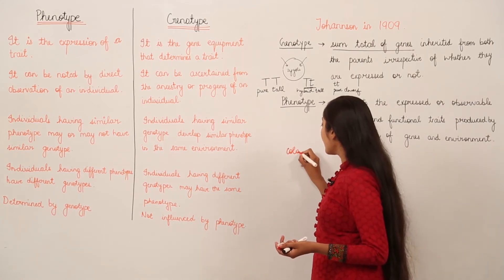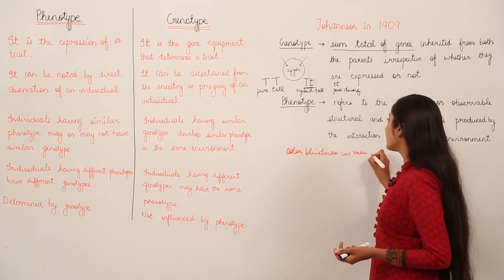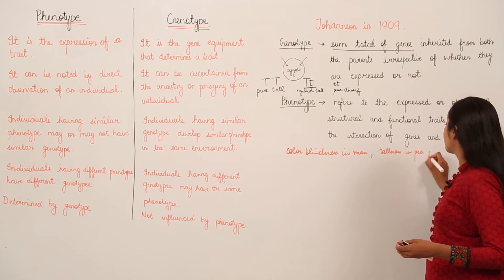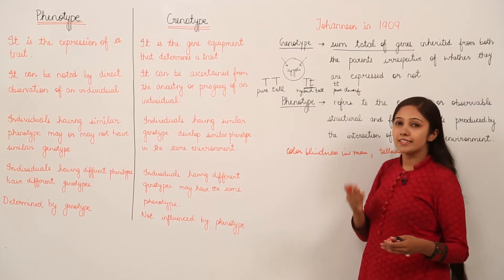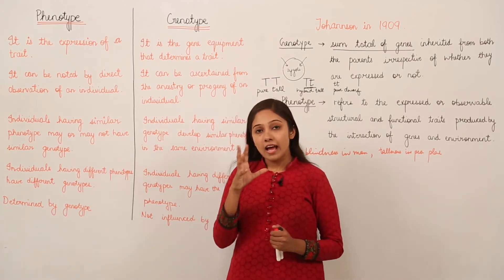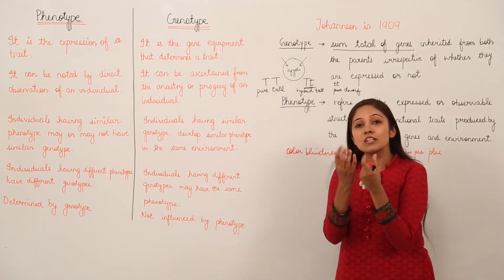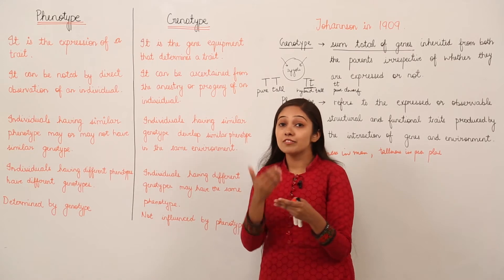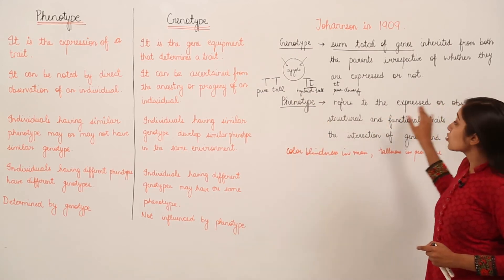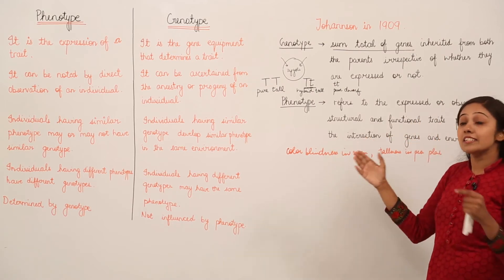Examples of phenotype include colour blindness in man, which is an observable trait, and tallness in pea plants. Another example is blood groups — many of us have had our blood groups tested. During blood group testing, antigens are checked and something is observed, so blood groups are an observable trait and can be an example of phenotype because it is being expressed and is observable.